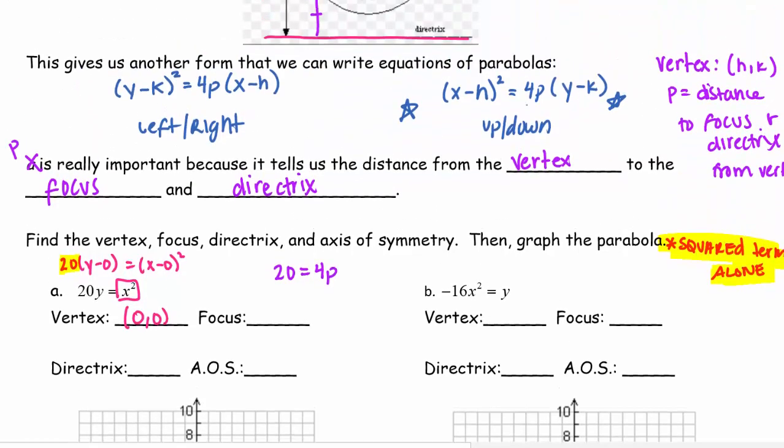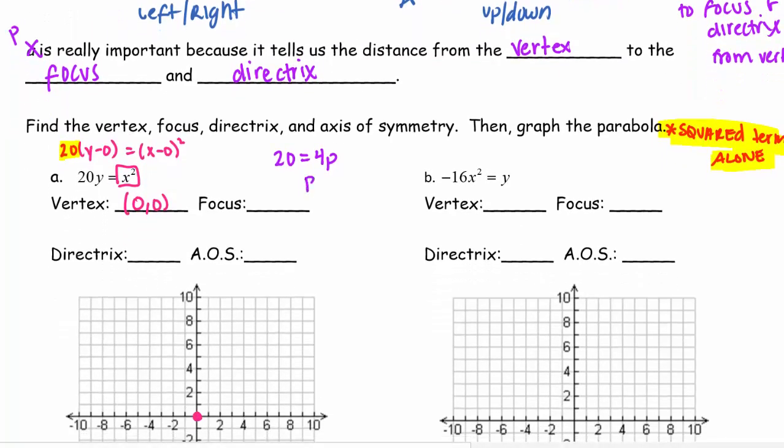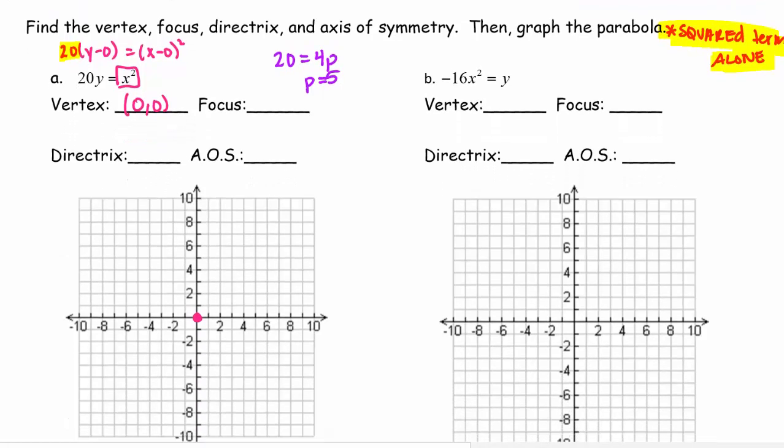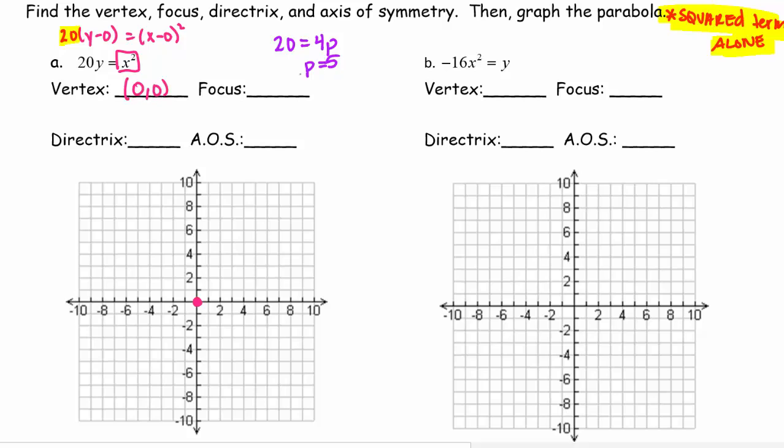Now I need to figure out where the focus and where the directrix go. But first I have to figure out how far away they are. So I have this 20 and that's very important because that's my number that is equal to 4p. Right, because in our original formula we have this 4p and that's just the definition and that's the rule. So I have to set this number equal to it, so I get p = 5.